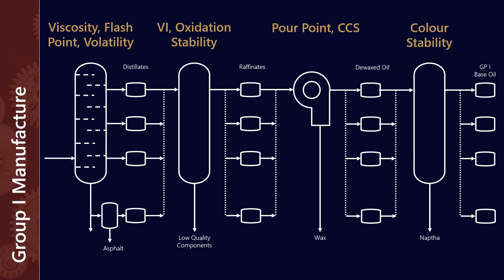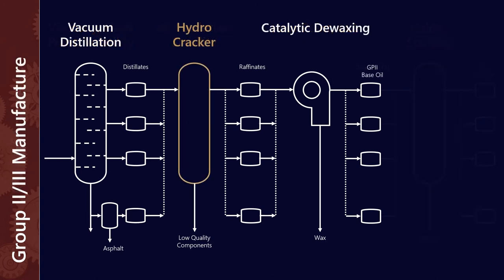So how is the manufacturing of a Group 2 or a Group 3 different from this? Well it's slightly different in so much as we introduce two new processes: the hydrocracker and catalytic instead of solvent de-waxing. So a hydrocracker is a little bit like hydro finishing except that it's a method for reducing molecular weight and saturating hydrocarbons and it's done at a much higher pressure.